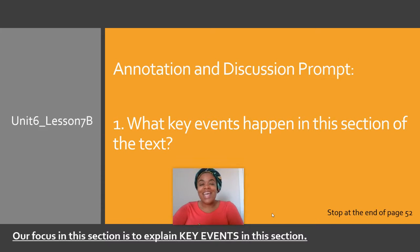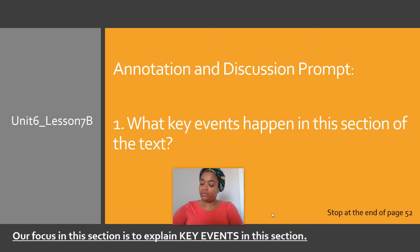Scholars, today's annotation and discussion prompt is: what key events happen in this section of the text? We will be reading up to page 52. Go ahead and write your discussion prompt on your paper. As a reminder, our focus for this section is just to explain the key events of this section.